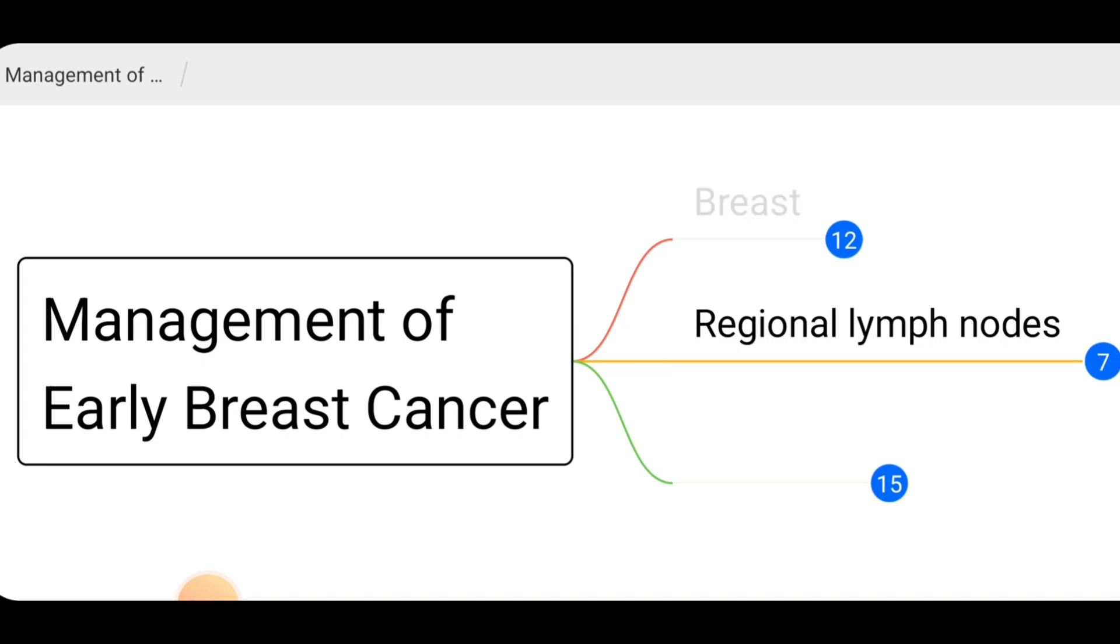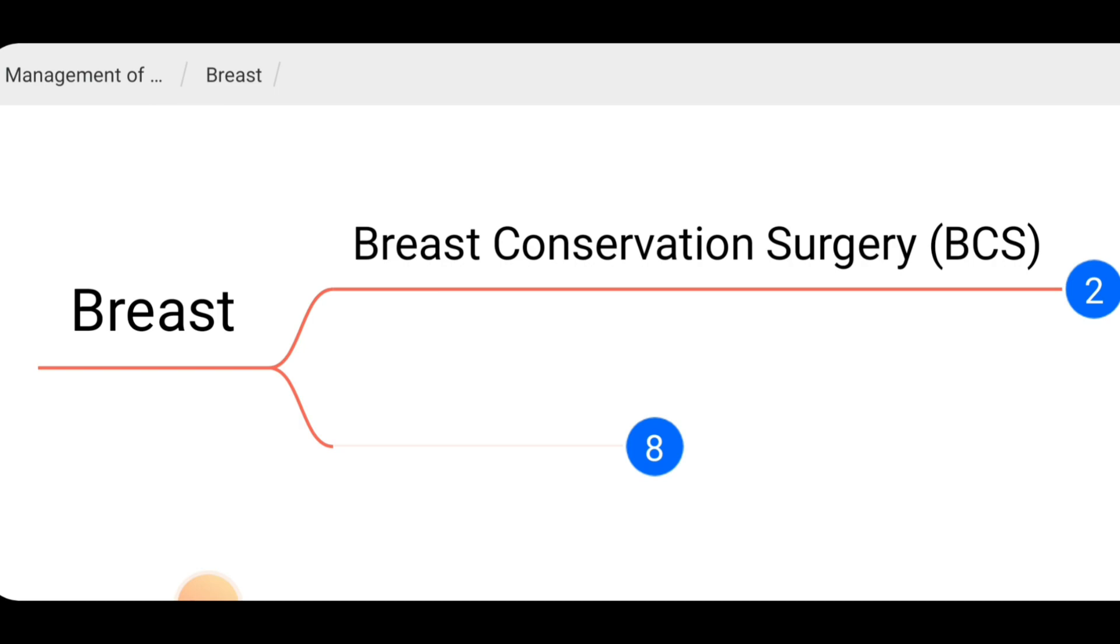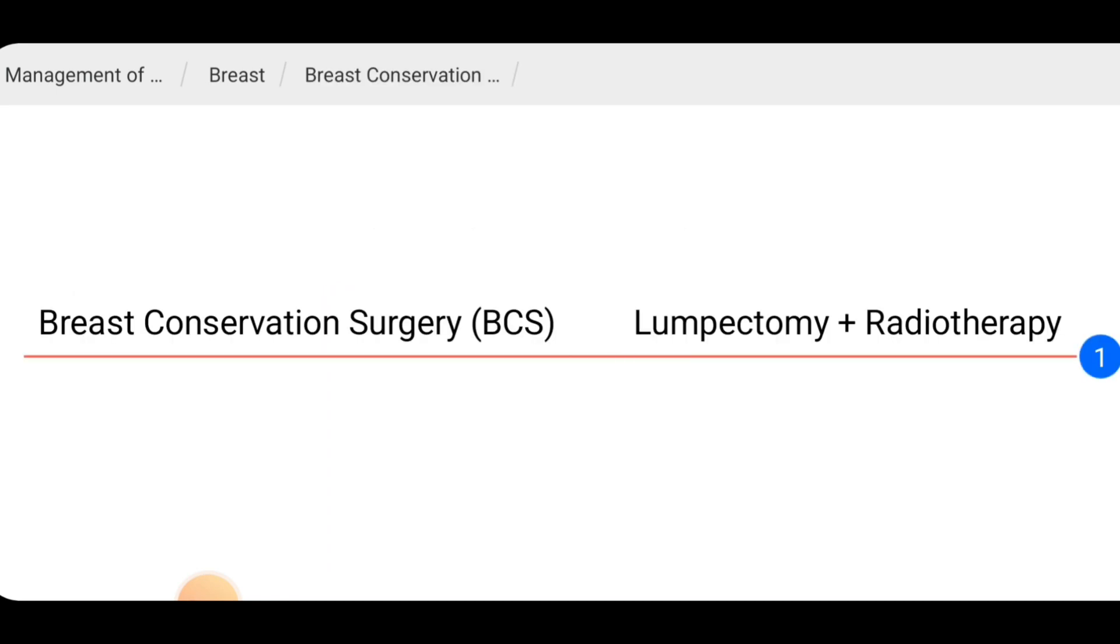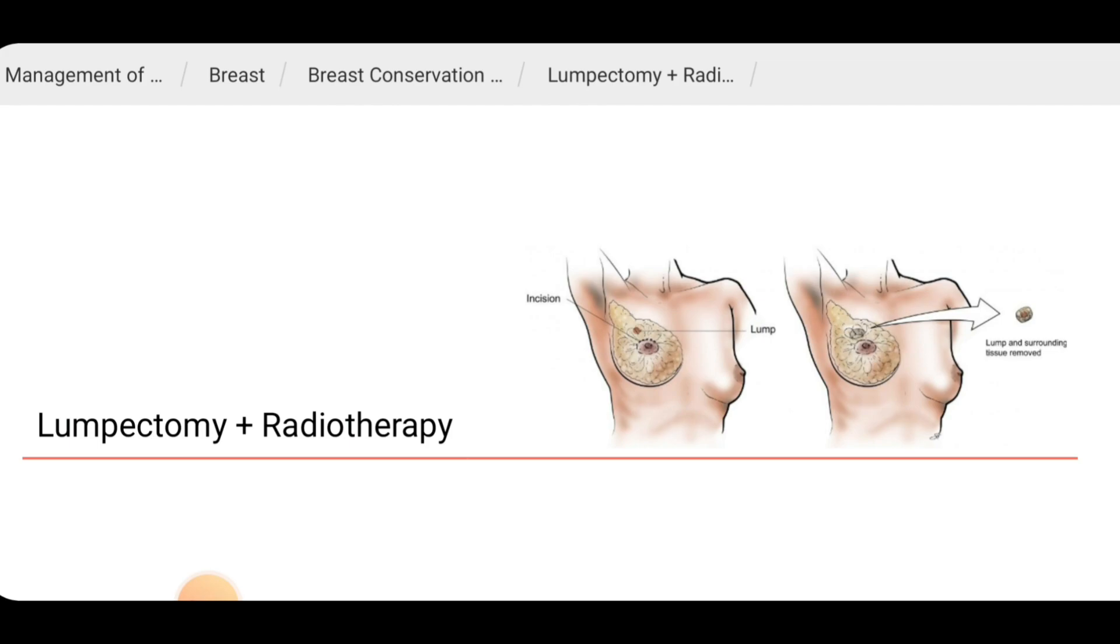Let's start with managing the breast. For early breast cancer, breast conservation surgery is a viable option. This means that we can perform a lumpectomy or a wide local excision with post-operative radiotherapy for the breast. During a wide local excision, we remove the lump with an adequate resection margin.